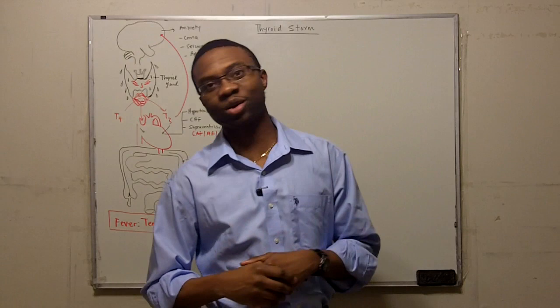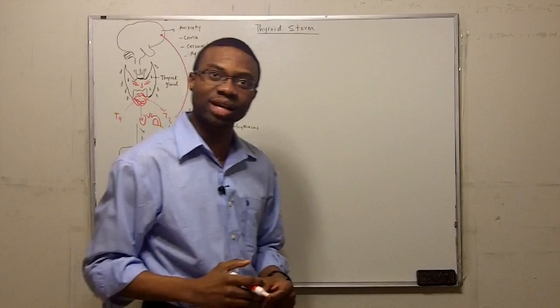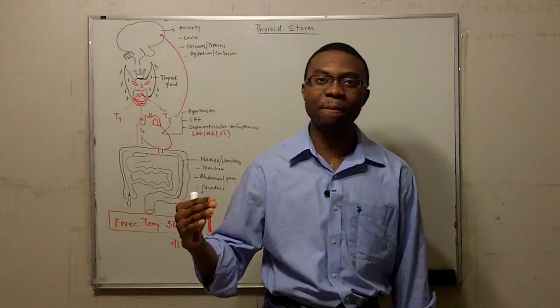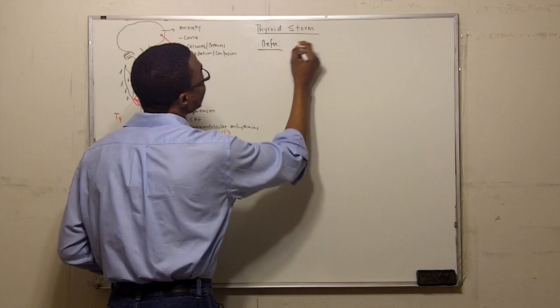So what exactly is thyroid storm? Let's look at the definition. Thyroid storm - something must have been happening in the thyroid gland. It's going out of whack. So we're going to start with the definition. This is a decompensated state of thyroid hormone-induced severe hypermetabolism. That's a big mouthful. Let's put it on the board.